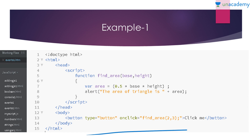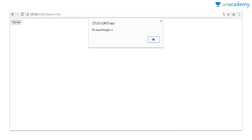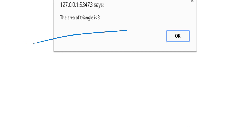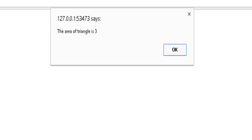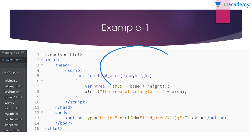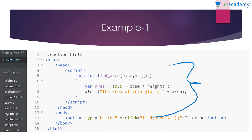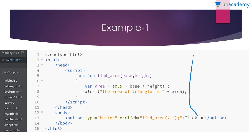It's a very simple code. In the button you use the onclick attribute and call the function. When I run the code and click the button, the alert shows the message: 'the area of triangle is 3' — exactly as expected. In this way we use parameters, arguments, call the function, and design a basic function. If you don't want to use parameters you can simply leave the brackets empty and not pass any arguments.